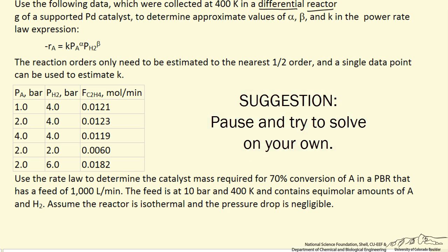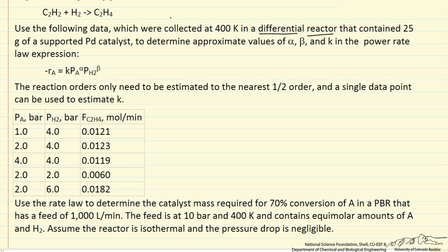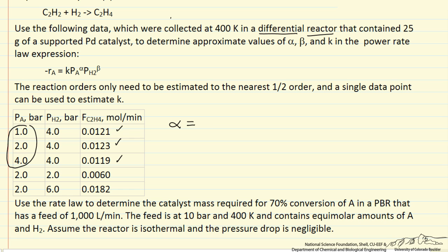So what we're going to do first is determine the order of reaction from the rate data given here. We'll determine alpha first — we'll look at the data where we have three values for the partial pressure of A while the partial pressure of hydrogen is kept constant. Notice these three rates are almost the same, namely this reaction is zero order in the pressure of A.